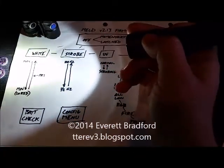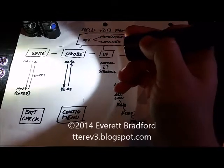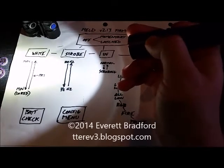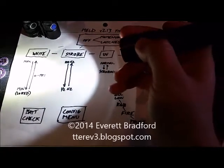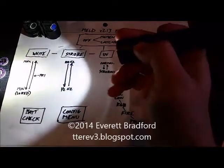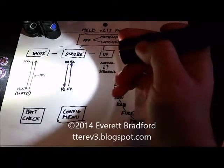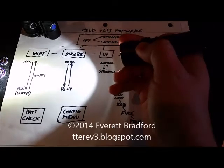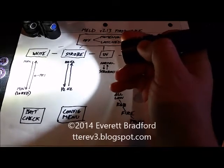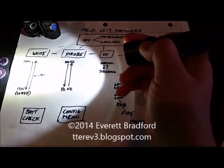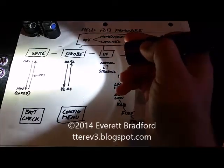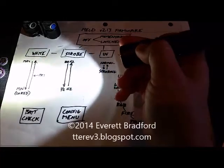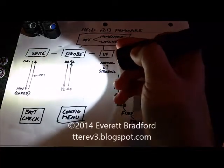Each option is indicated by a special pattern of light. To select one, I'll hold down the switch, and to move on to the next option, I'll click the switch. If I don't select something for 10 seconds, it will just quit out of the menu.